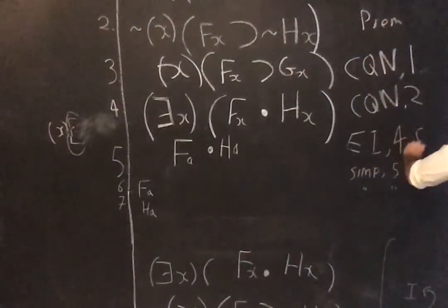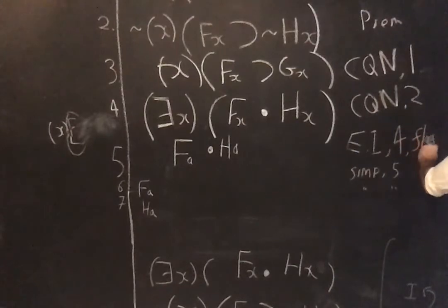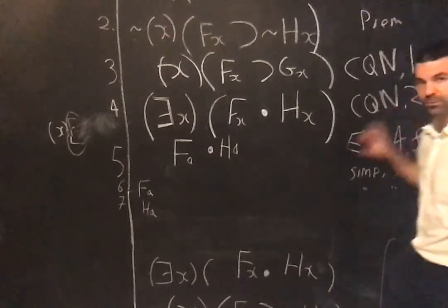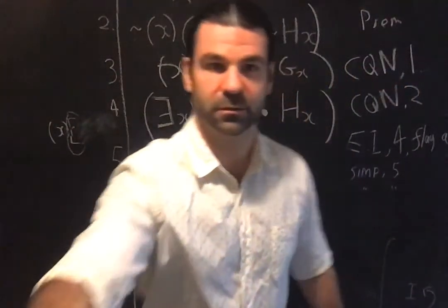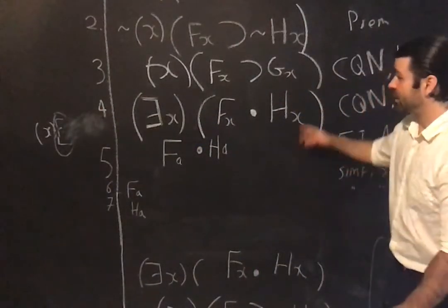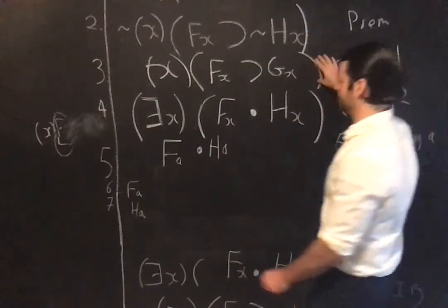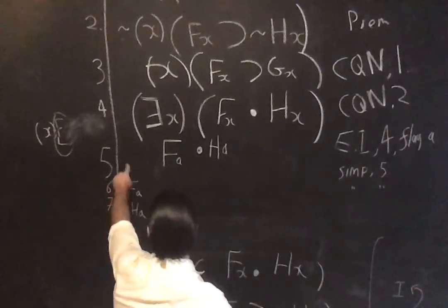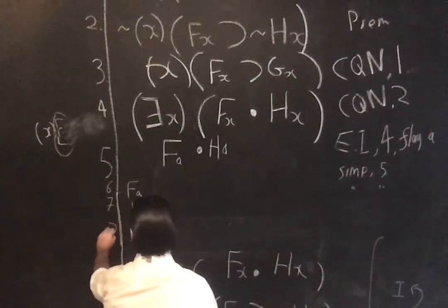By the way, you have to write flag A when you instantiate, you'll see much more in 15. All right, then I do the universal instantiation. I could have done it at step six, maybe, doesn't matter.